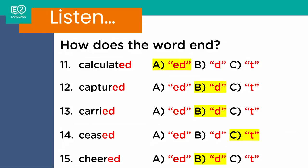Let's have a look at the answers. Number eleven: 'calculated' — t. Number twelve: 'captured' — d. That one's almost A, isn't it? It's a bit of a halfway between A and B — give yourself a score if you got either of those. Number thirteen: 'carried' — d. Number fourteen: 'ceased' — distinctly a t sound. Number fifteen: 'cheered' — d. How did you go out of fifteen? Pop your score into the comments below.